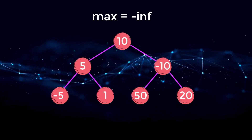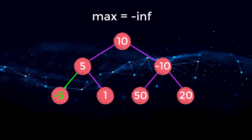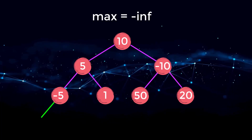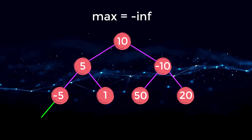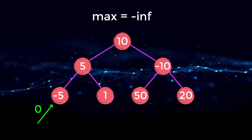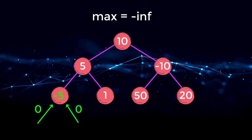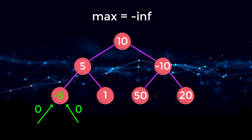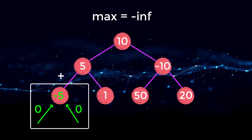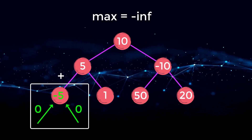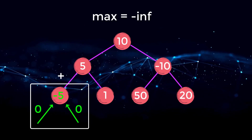We're going to start our traversal at node 10, then go left to node five, then left to negative five, and then left again — but that's a null value. When we encounter a null value, there is no path, meaning our sum at this point is just zero, so we return zero to negative five. We go right, and that is also null, so we return zero. Now at node negative five, we compute our new max: left plus right plus current value is zero plus zero plus negative five, which is negative five. And negative five is greater than negative infinity, so that becomes our new max.